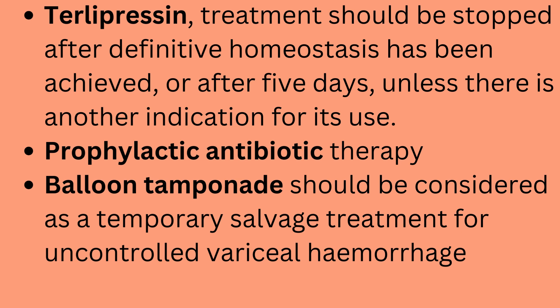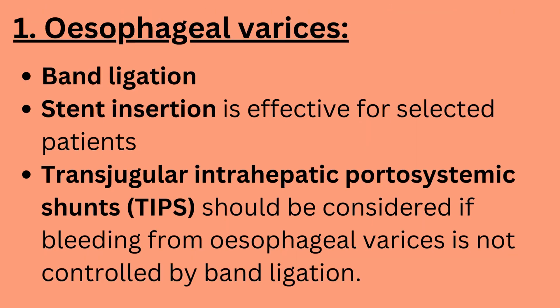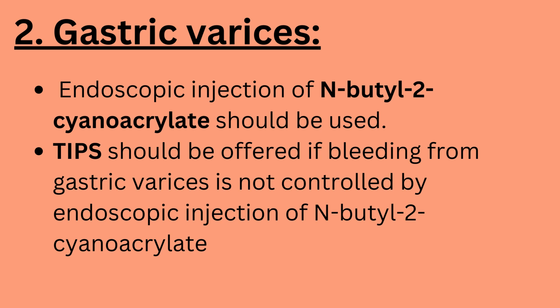Treatment of variceal bleeding. Terlipressin treatment should be stopped after definitive hemostasis has been achieved or after 5 days, unless there is another indication for its use. Prophylactic antibiotic therapy. Balloon tamponade should be considered as a temporary salvage treatment for uncontrolled variceal hemorrhage. For esophageal varices: band ligation; stent insertion is effective for selected patients. Transjugular intrahepatic portosystemic shunts (TIPS) should be considered if bleeding from esophageal varices is not controlled by band ligation. For gastric varices: endoscopic injection of N-butyl-2-cyanoacrylate should be used. TIPS should be offered if bleeding from gastric varices is not controlled by endoscopic injection.